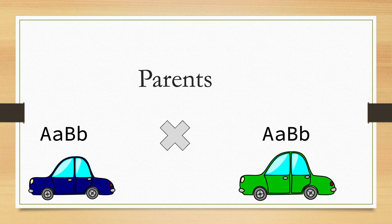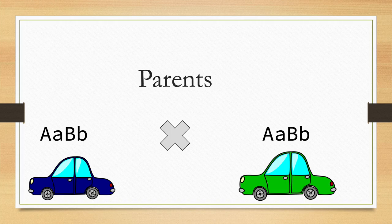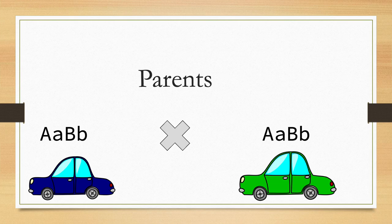Parent two is a green four-door sedan with leather seats. We are going to use car characteristics as genes to see what kind of offspring these parents will make.